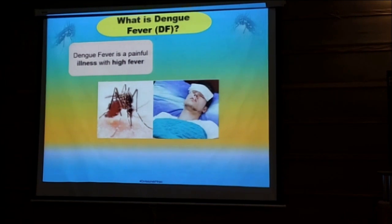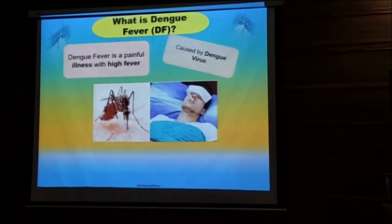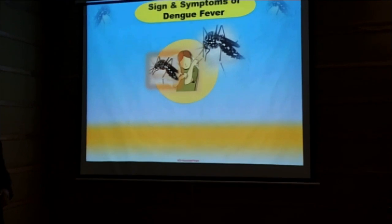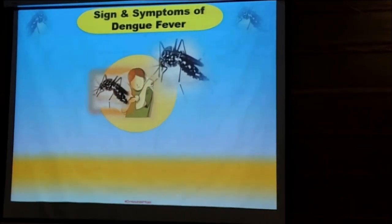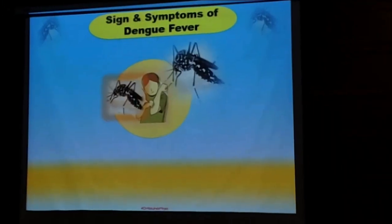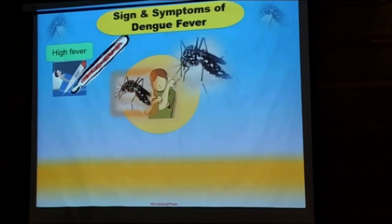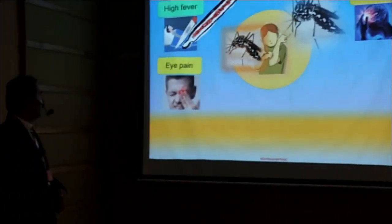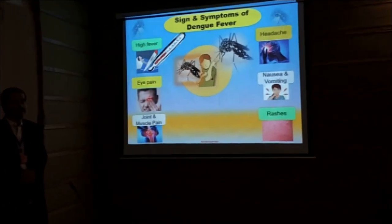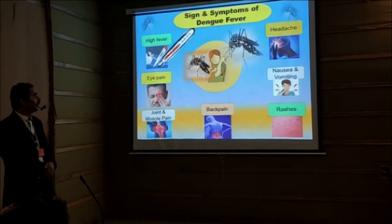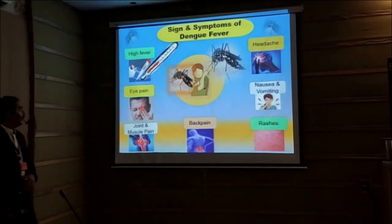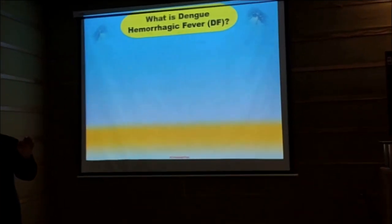So what is Dengue fever? Dengue fever is a painful illness with high fever caused by the Dengue virus, and transmitted through the bite of mosquitoes. What are the signs and symptoms? How can we detect that a patient is suffering from Dengue fever? The first signs and symptoms mostly observed in patients are high fever, headache, eye pain, nausea and vomiting, joint and muscle pain, rashes on the body, and even breakbone pain. Sometimes this disease is also called breakbone fever due to the pain in the whole body.